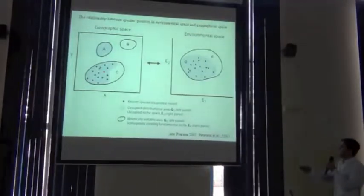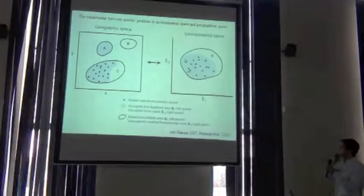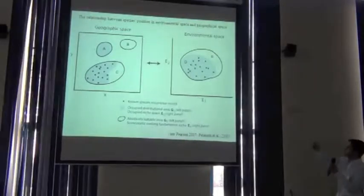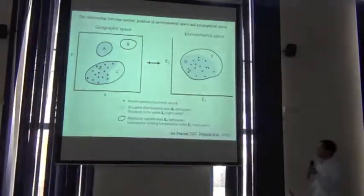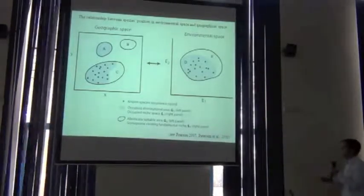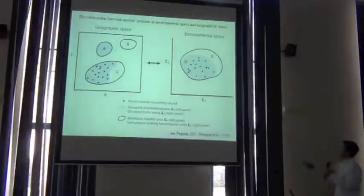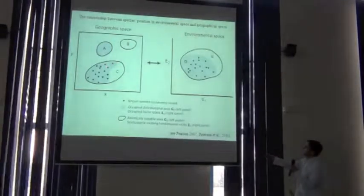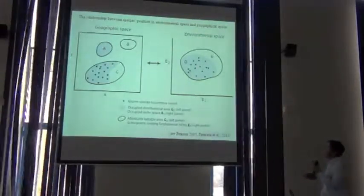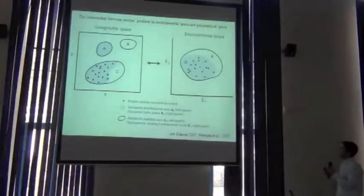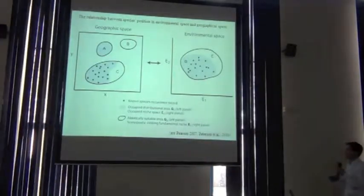We can plot those in geographic space — this might be on a hillside, there's no scale here on purpose, no north-south; this is just a conceptual geographical space that might be some continents or a very small area within one field. We can plot those points in geographic space, and we can then also plot them in ecological space, since each one of these localities has a temperature and precipitation associated with it.